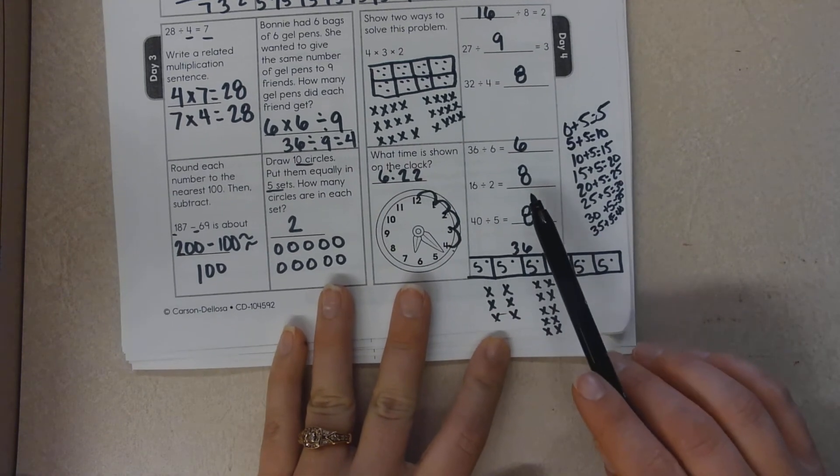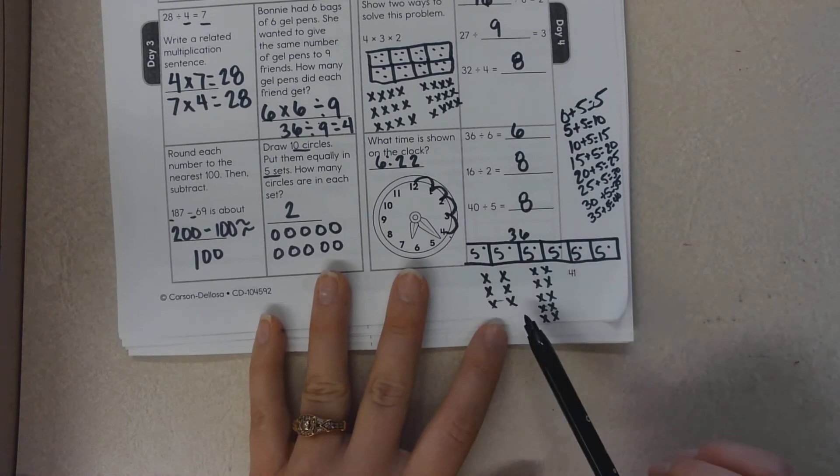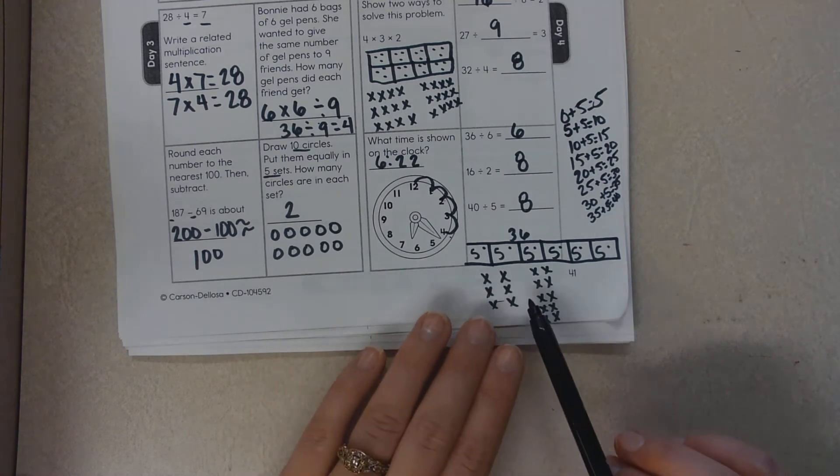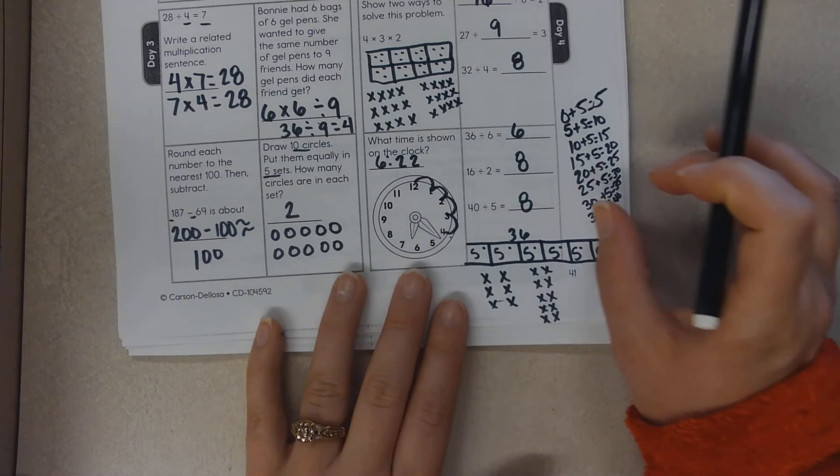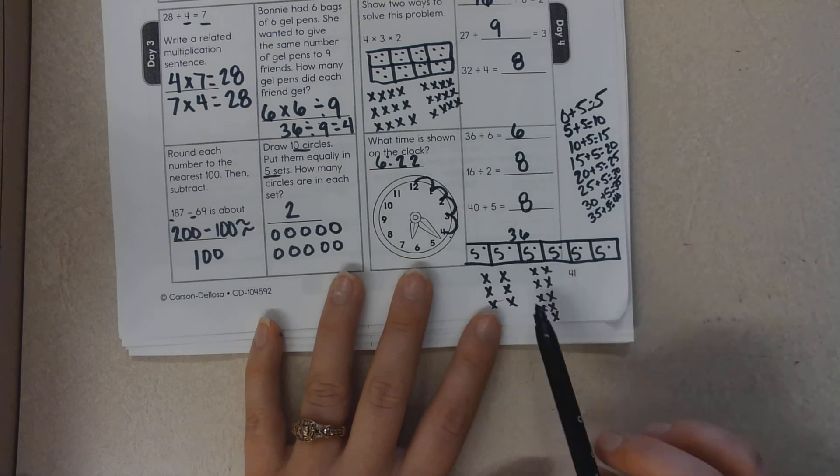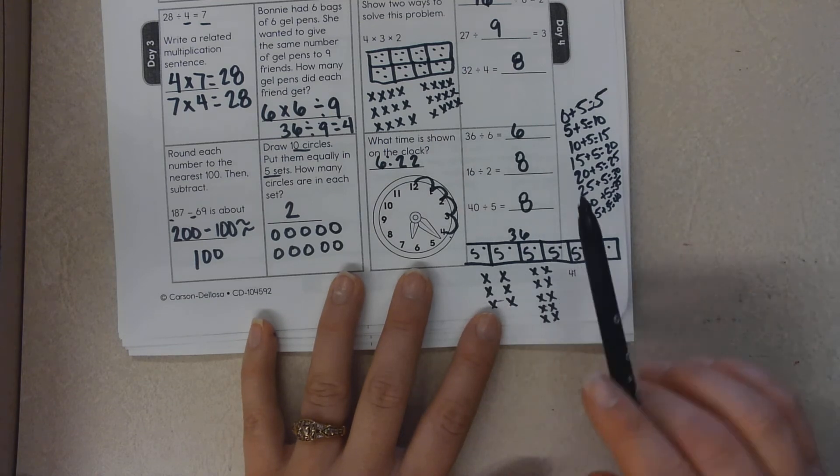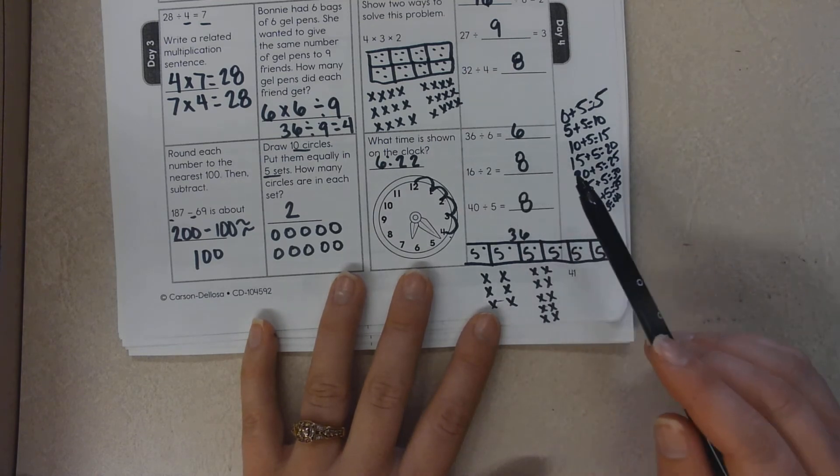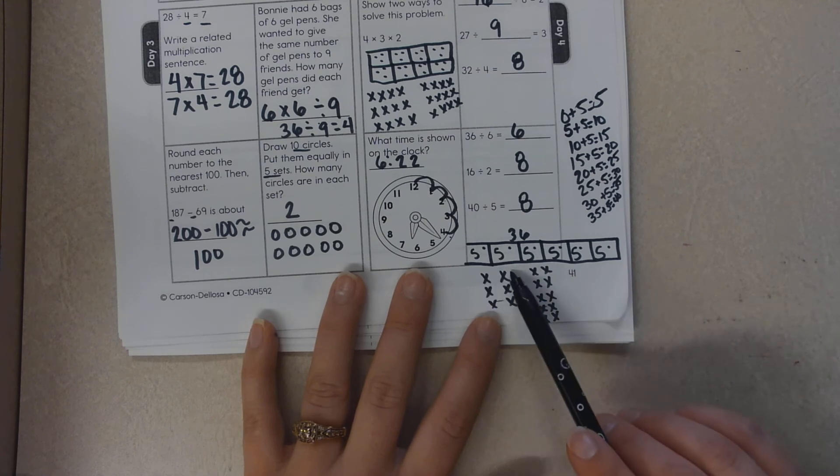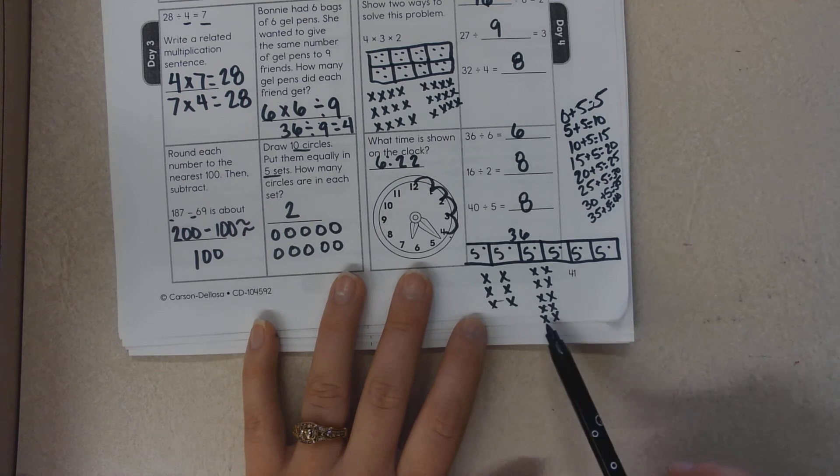Down here I drew an array and I made a mistake. I did not allow enough room to draw my complete array. I had to block it into two spots, but 16 divided by two... I counted by twos up to 16. So there's eight groups of two.